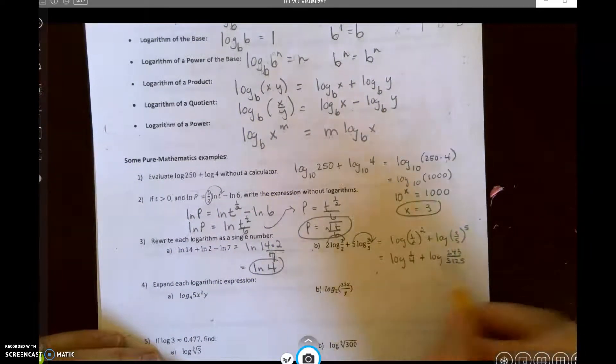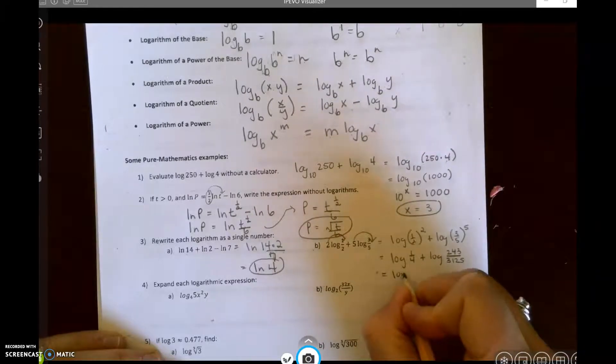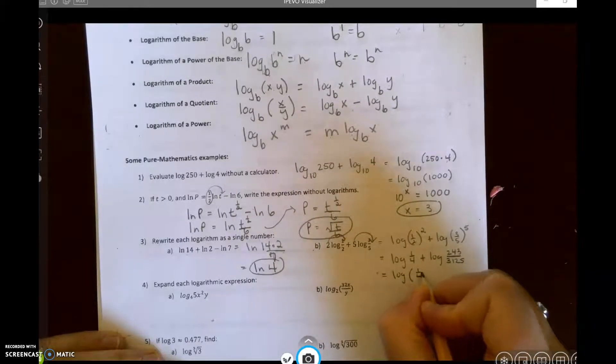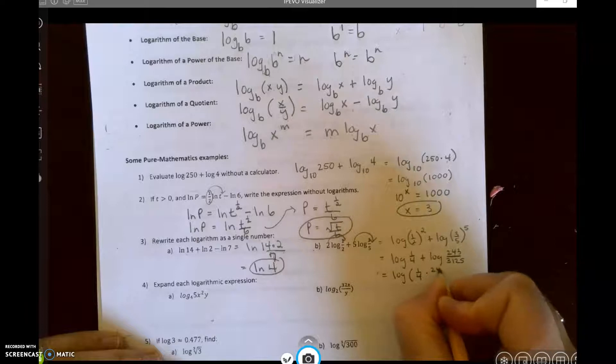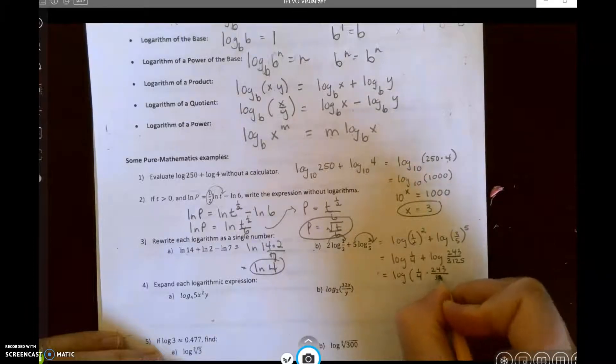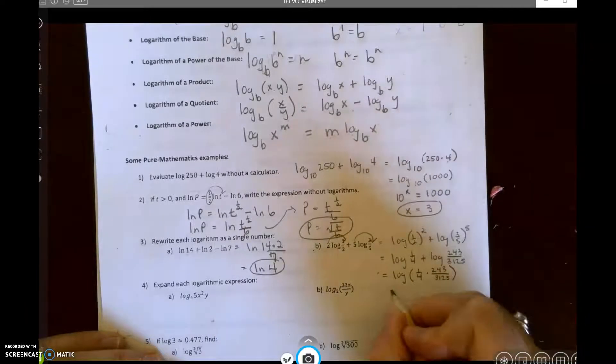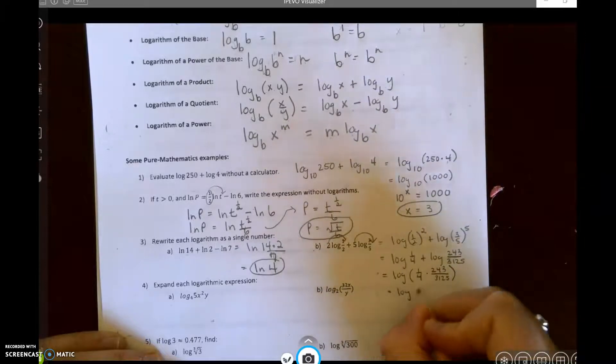So log of one-fourth times 243 over 3,125. So let's see what I get for that. I'll use my calculator.